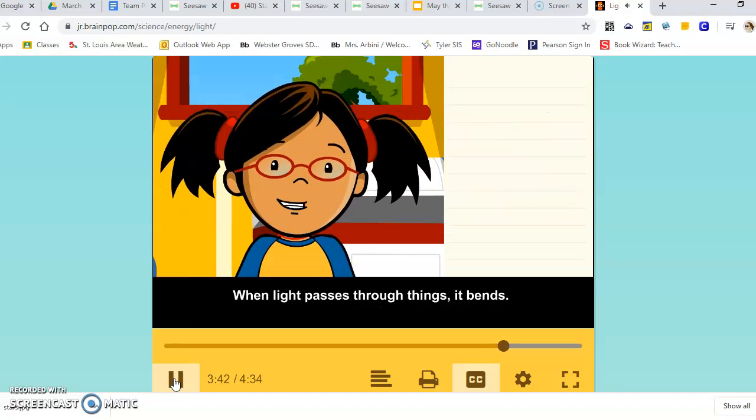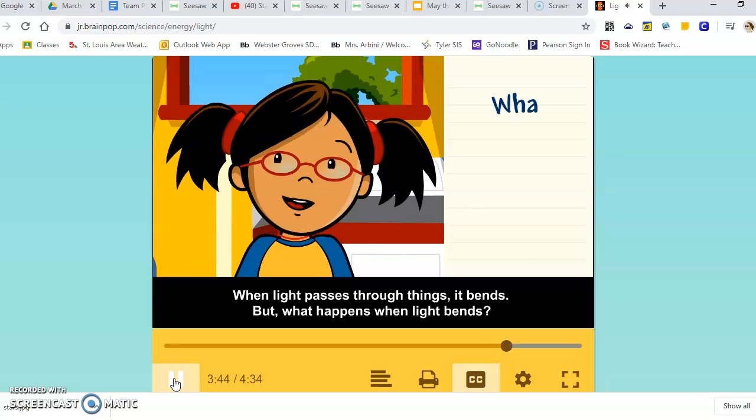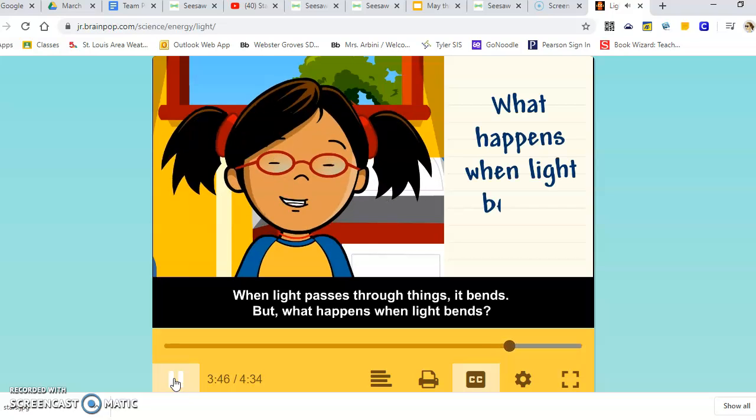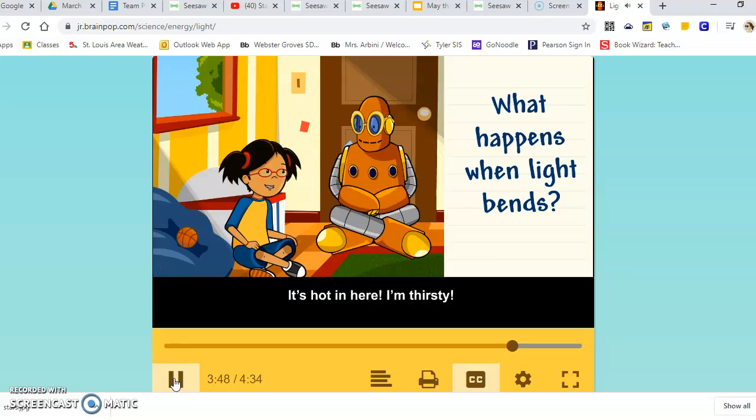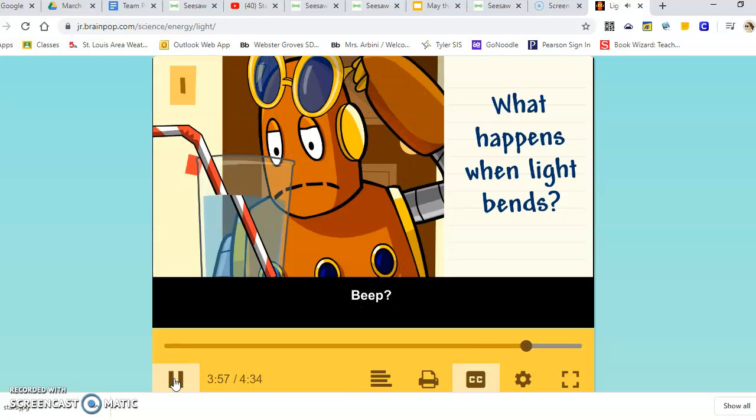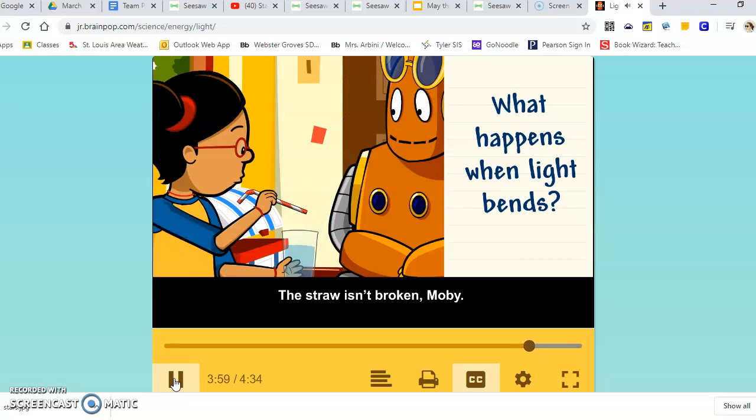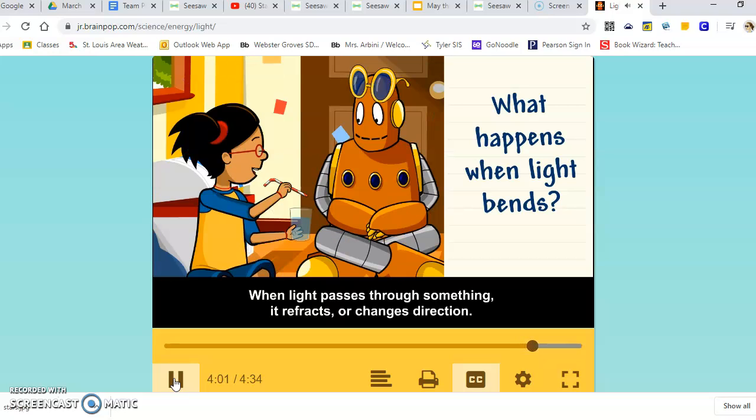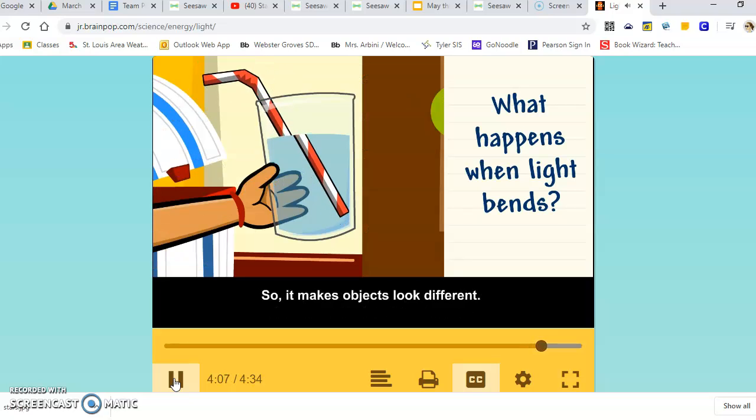When light passes through things, it bends. But what happens when light bends? It's hot in here. I'm thirsty. Thanks, Moby. Cool, check it out. The straw isn't broken, Moby. When light passes through something, it refracts, or changes direction. So it makes objects look different.